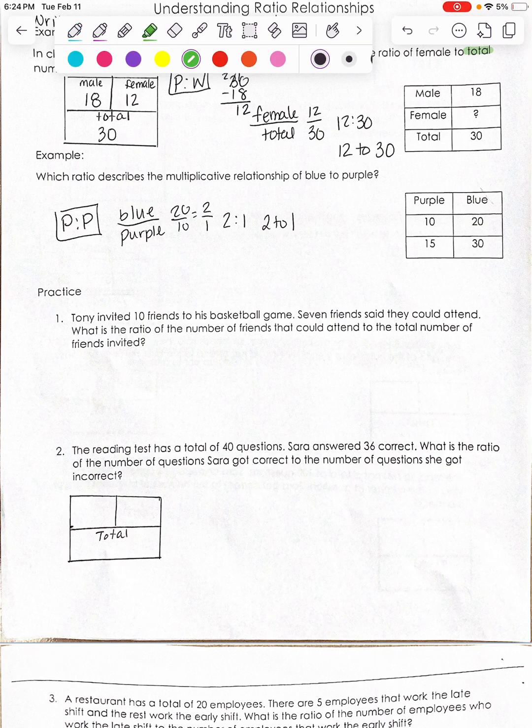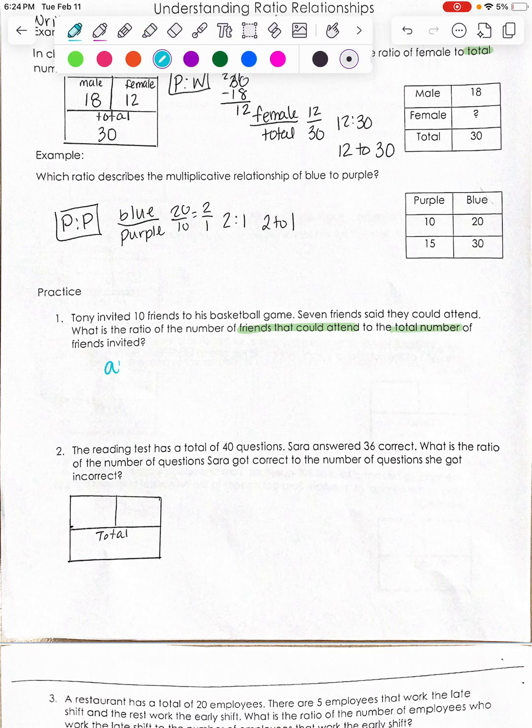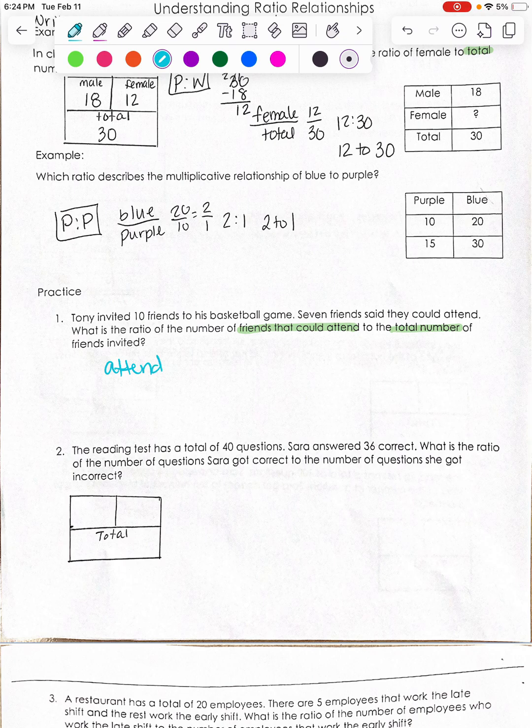So we need to pay attention to what it's asking for the ratio of and the order. So it says, what's the ratio of the number of friends that could attend to the total number? So I'm just going to write like attend total.